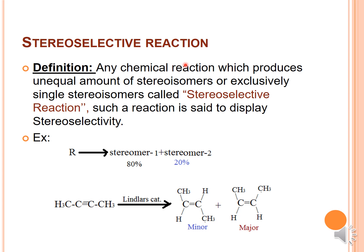Stereoselective reactions are those reactions — in stereoselective reactions you have to study the definition and classification. Moving on to definition: a stereoselective reaction is a chemical reaction which produces unequal amounts of stereoisomers. If you are taking one substrate and getting two unequal amounts of products — like one is your major product at 80% and one is your minor at 20% — that reaction is called a stereoselective reaction. Such a reaction is said to display stereoselectivity, and that phenomenon is known as stereoselectivity.